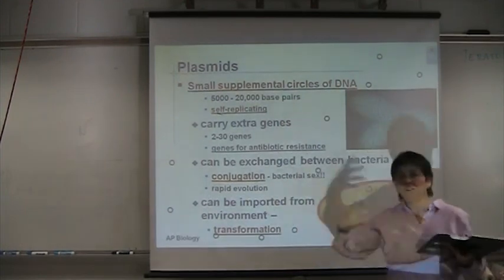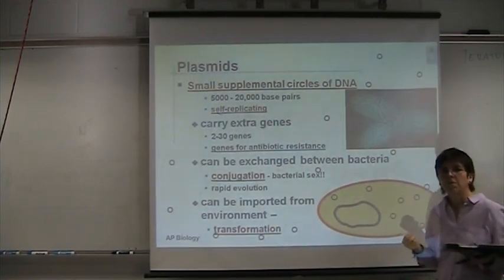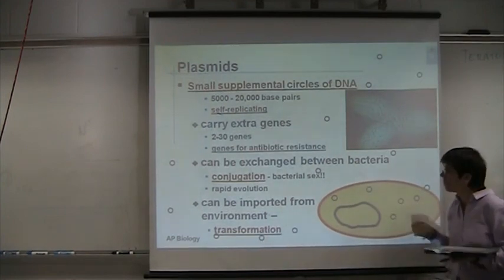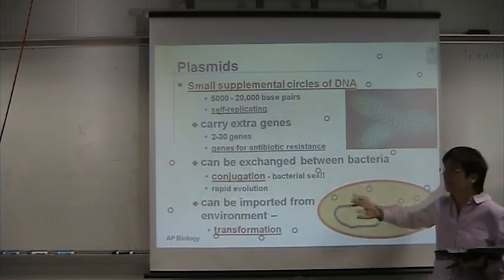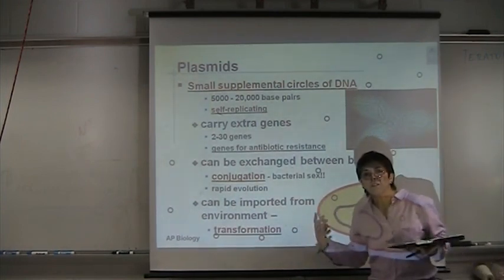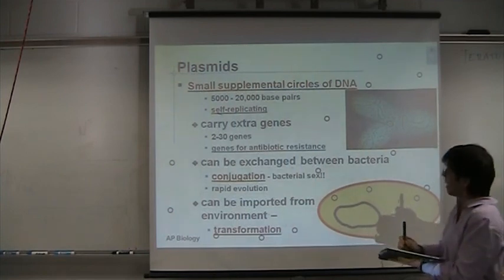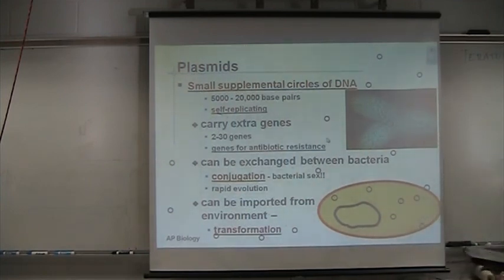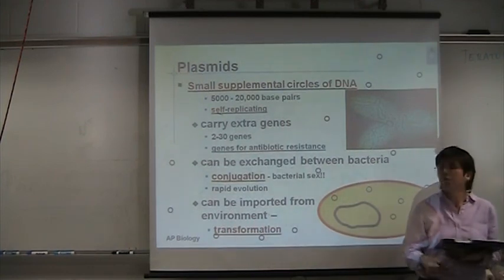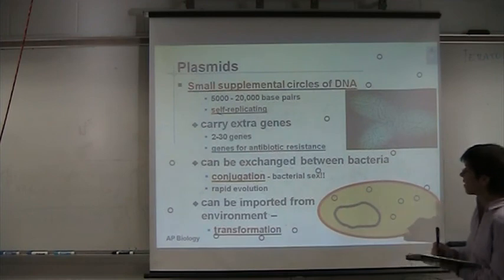The other way plasmids can be shared is by transformation — when bacteria can pick up either plasmids or pieces of DNA from the environment. If a bacteria happens to die and all its contents spill out into the environment, those plasmids will be in the environment, and any other bacteria around could pick them up and be transformed. It's called transformed because the phenotype is going to change, because now it's picking up a new set of genes. This was the Griffith experiment early on in the history of DNA. Bacteria are our workhorses — they are the ones that are going to do the work for us.